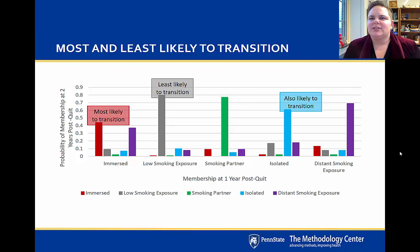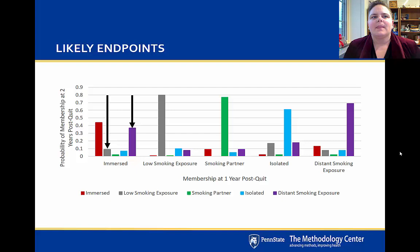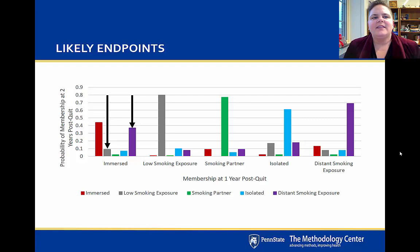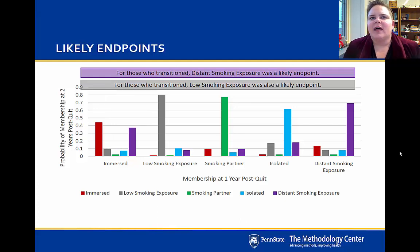Looking at the Immersed and Isolated classes more closely: individuals starting in the Immersed class had about a 44% chance of remaining Immersed at two years post-quit, but also about a 36–37% chance of transitioning to the Distant Smoking Exposure class. The next most likely transition — though not very likely — was about 9–9.5% moving from Immersed to Low Smoking Exposure. Overall, for individuals who did transition, Distant Smoking Exposure and Low Smoking Exposure were quite likely endpoints across all five classes.